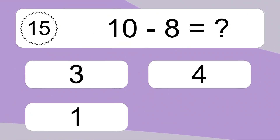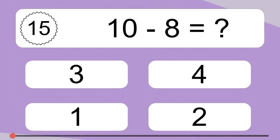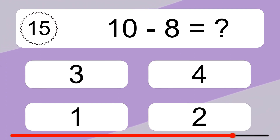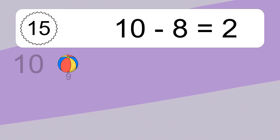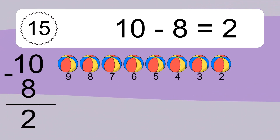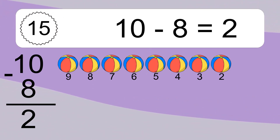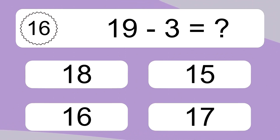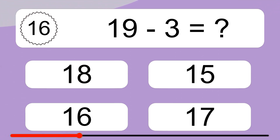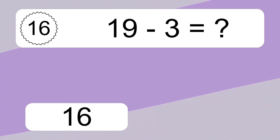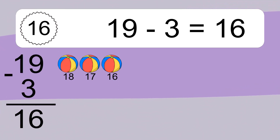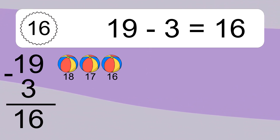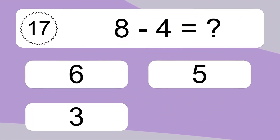10 minus 8 equals what? 10 minus 8 equals 2. Let's count it: 9, 8, 7, 6, 5, 4, 3, 2. 19 minus 3 equals what? 19 minus 3 equals 16. Let's count it: 18, 17, 16.